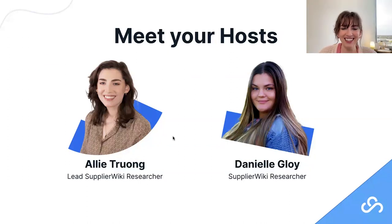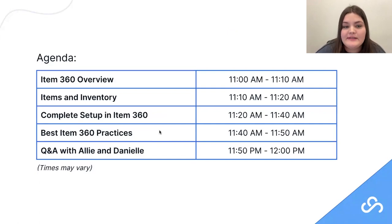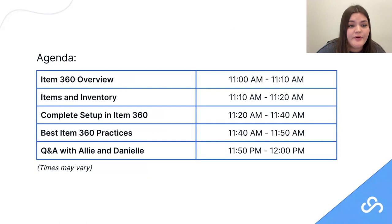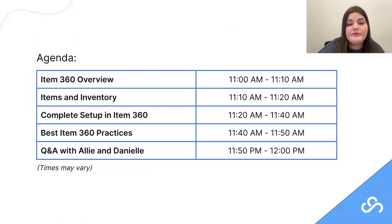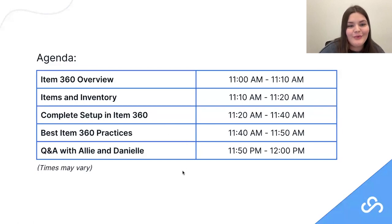Moving on into Item 360 201, some topics you can expect throughout the webinar: first, a quick overview of what Item 360 is and what it's used for; then items and inventory referencing the Supplier One platform, covering similarities with Item 360; then how to do a complete setup in Item 360; some best practices; and finally we'll end with a Q&A. Please submit any questions you have along the way.